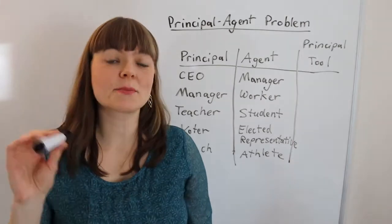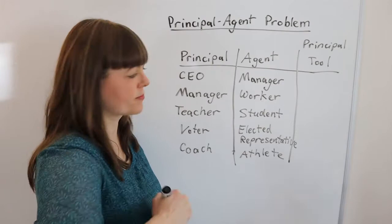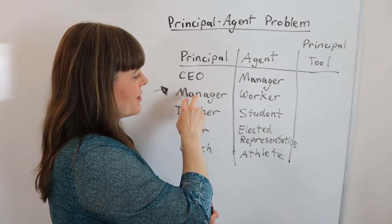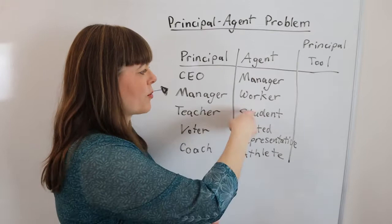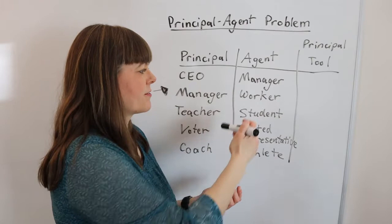What is the principal-agent problem? The basic problem is that you have a principal and an agent — using the classic example of the manager and the worker. The agent is working on behalf of the principal, so the manager hires the worker, but the manager does not have full control over what the worker does. Salary and salary structure is one of the main tools the manager has for incentivizing the worker.